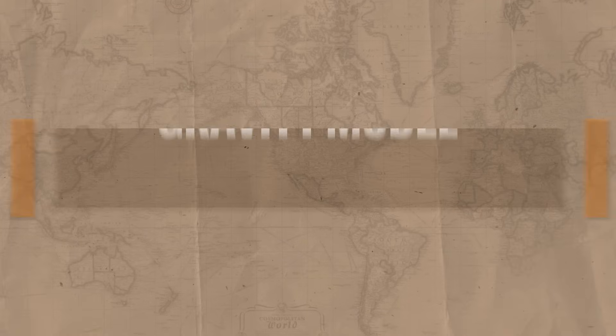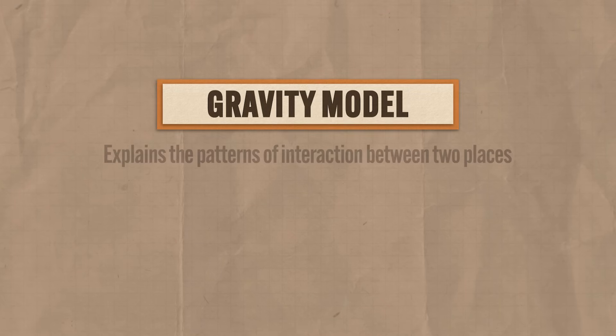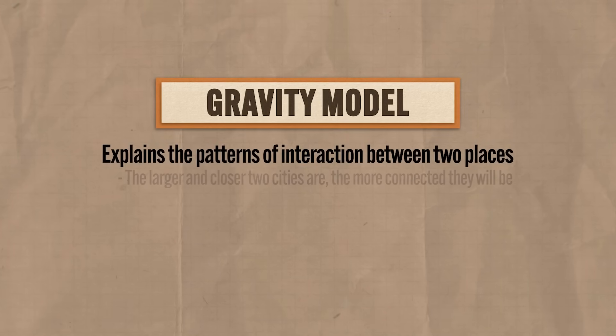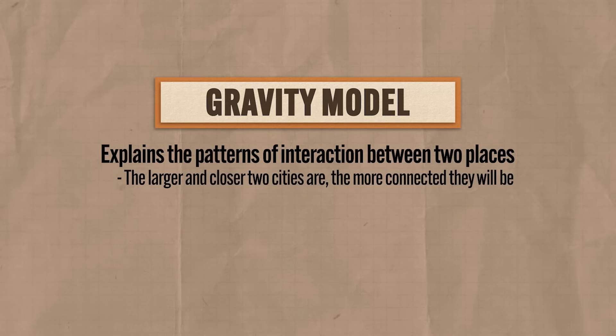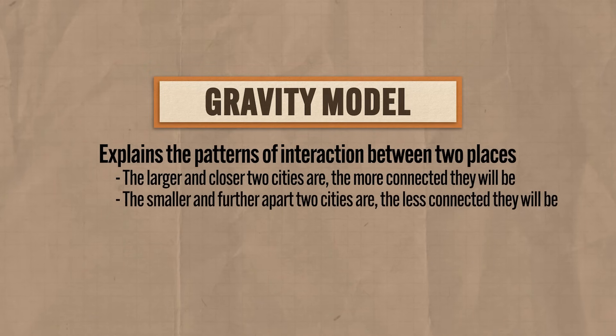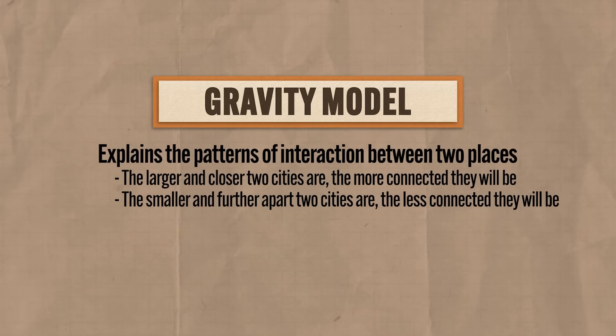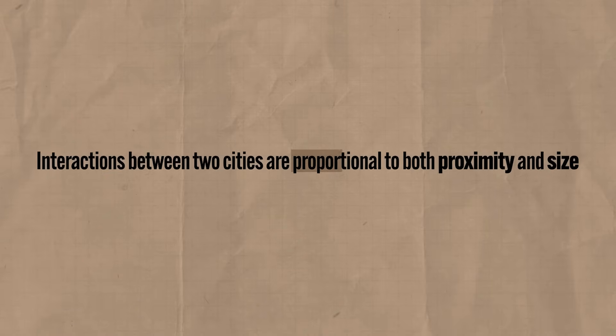Now let me introduce the gravity model, which is a bit different. The gravity model explains the patterns of interaction between two places, claiming that the larger and closer two cities are, the more connected they will be — and the smaller and farther apart they are, the less connected. This model is primarily used to predict the flow of people between two cities for work, vacation, or migration. The key principle: interactions between two cities are proportional to both proximity and size.